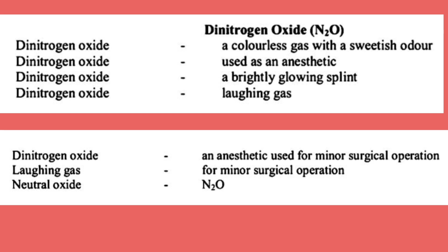Dinitrogen oxide (N2O) is a colorless gas with a sweet odor. It is used as an anesthetic. A brightly glowing splint is used to test for dinitrogen oxide.